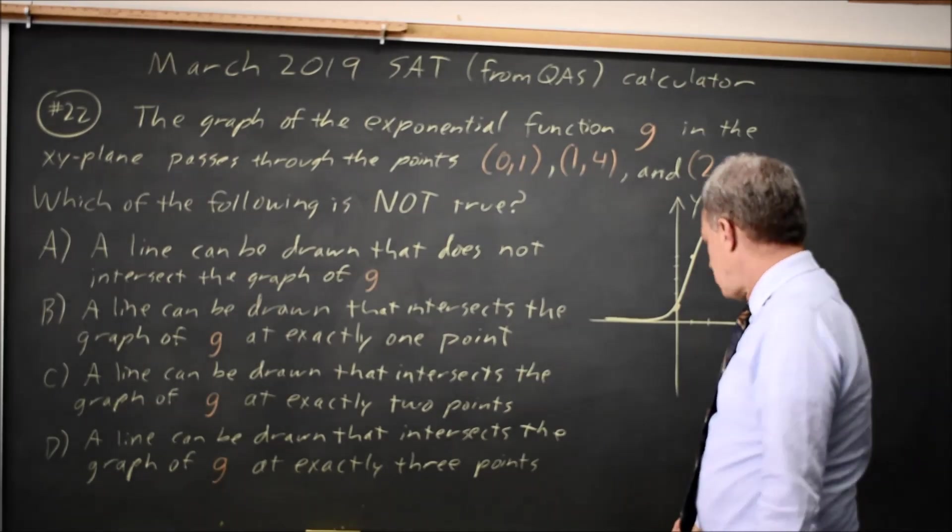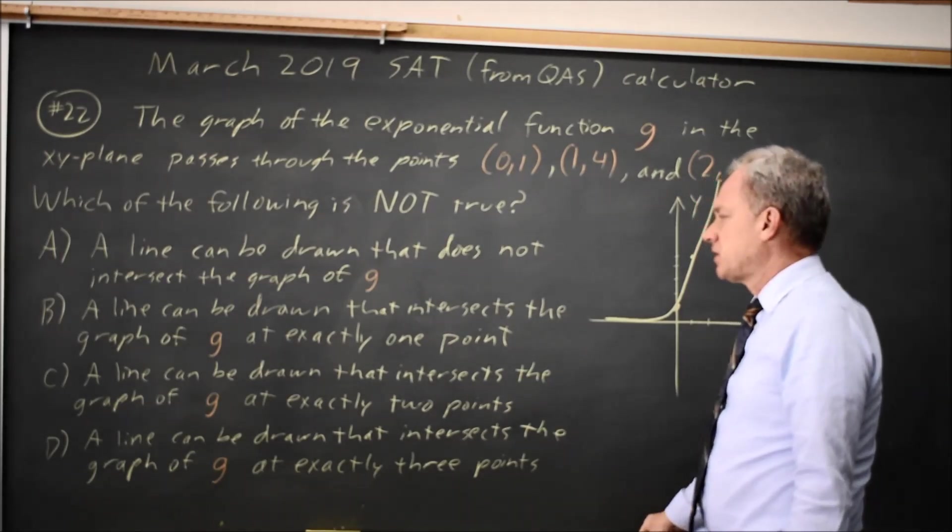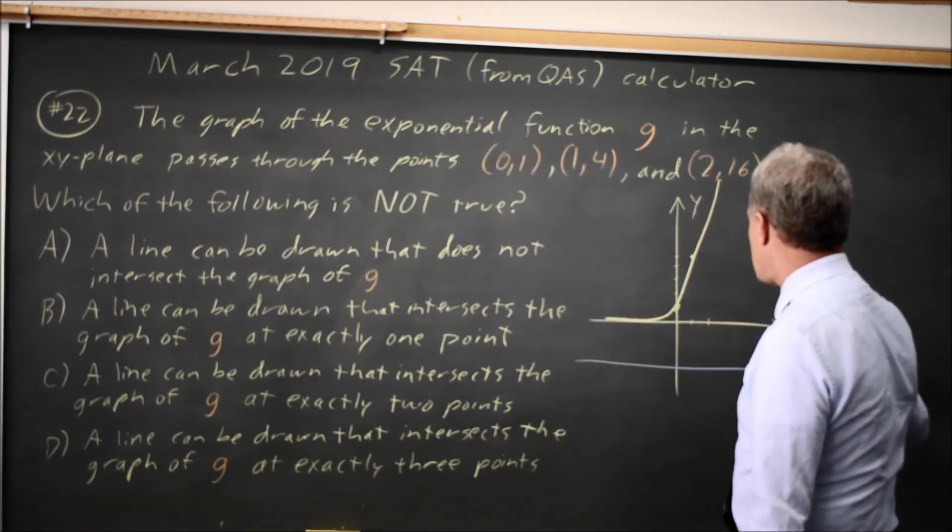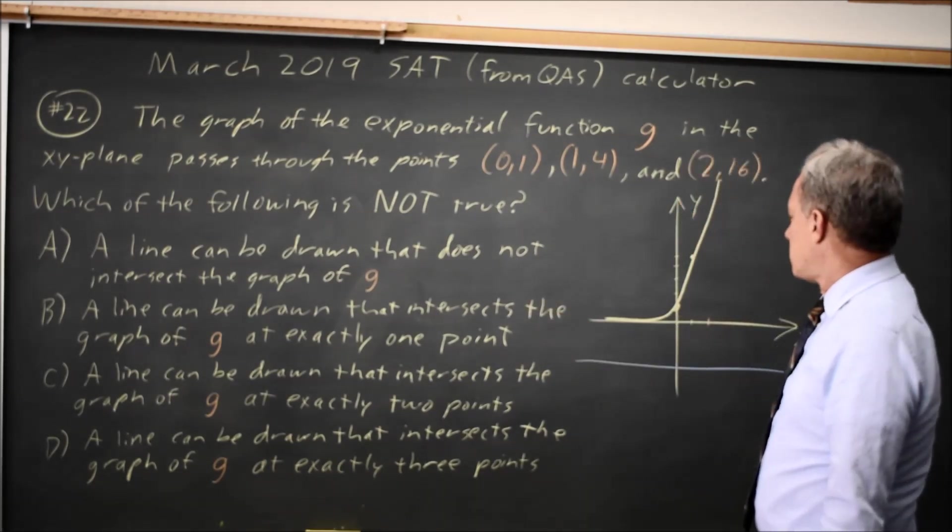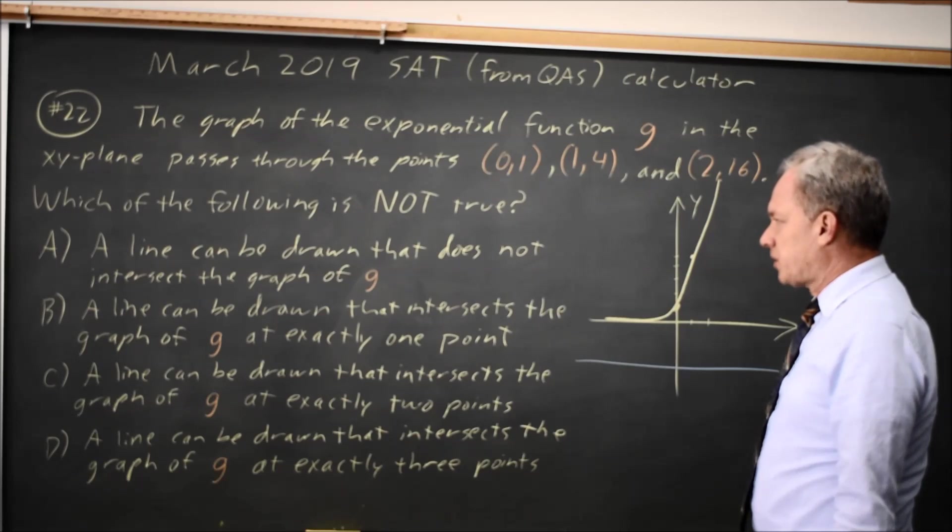And I can certainly draw a line that does not intersect, which is choice A. A horizontal line with a negative y value will not intersect.